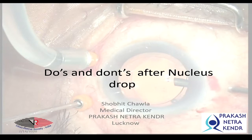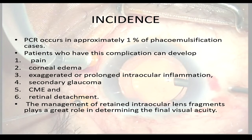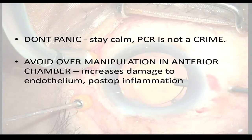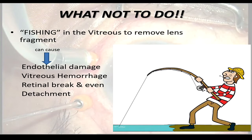Dr. Shobit Chawla now presents the do's and don'ts after nucleus drop. PCR occurs in approximately 1% of FACO cases, and patients can have simple pain to corneal edema, CME, retinal detachment, and exaggerated inflammation. A simple PCR without vitreous loss can be concluded as a routine procedure, while a large PCR with fragments entirely can be managed by anterior vitrectomy and pars plana needle levitation of fragments and emulsification. Once lens matter is in vitreous, it requires a complete vitrectomy. Avoid panic — stay calm, PCR is not a crime. Avoid over-manipulation in the anterior chamber as it increases endothelial damage and post-op inflammation. Fishing of any kind in the vitreous to remove lens fragments is an absolute no — it can cause endothelial damage, vitreous hemorrhage, retinal break, and even detachment.